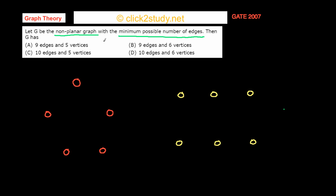There are four options and one of them is correct. The options include nine edges and five vertices, or six vertices and nine edges, and so on. To quickly review: a non-planar graph is a graph that if you try to draw on a plane, no matter what you do, at least two edges of that graph will always cross each other. That's a non-planar graph — no matter how you draw it, there will always be edges crossing. So we need to find that non-planar graph with the minimum number of edges.